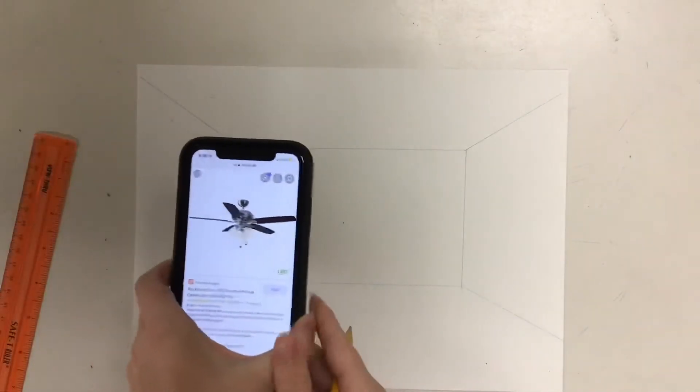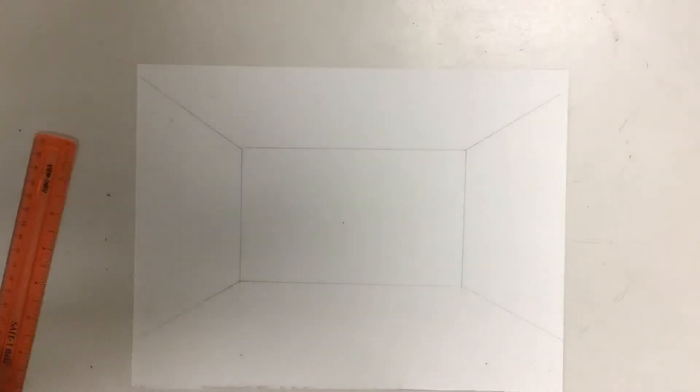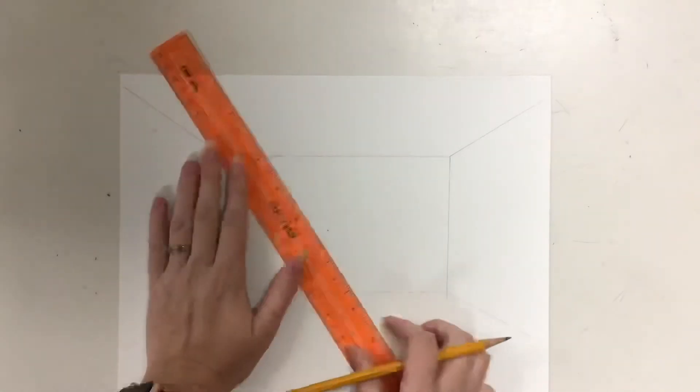So I've got here a picture of a ceiling fan pulled up. I would definitely pull up a picture on your iPad to use as reference. And then I'm going to use my ruler just to give myself some guidelines of where to draw.